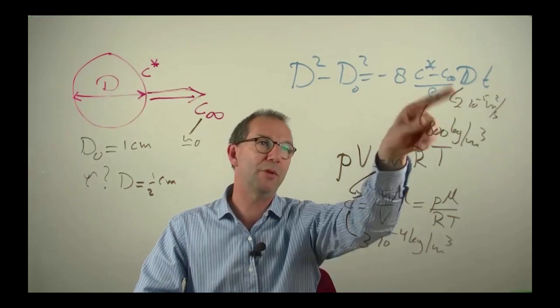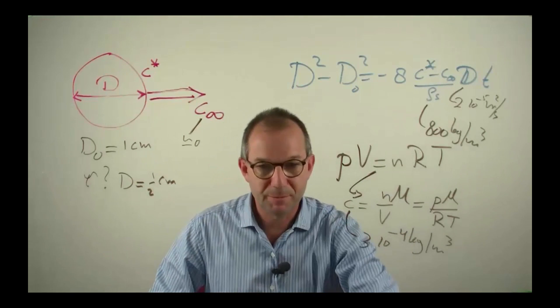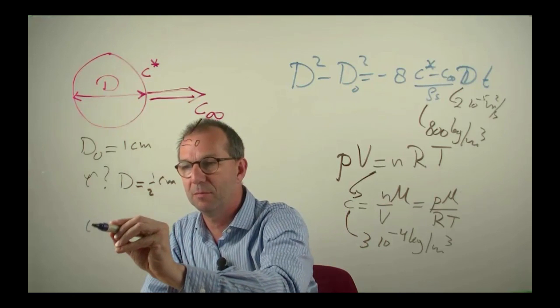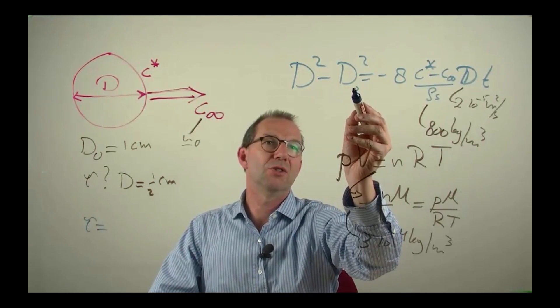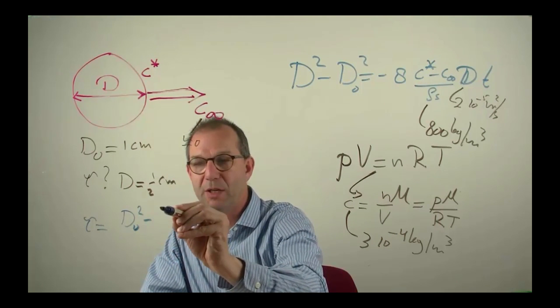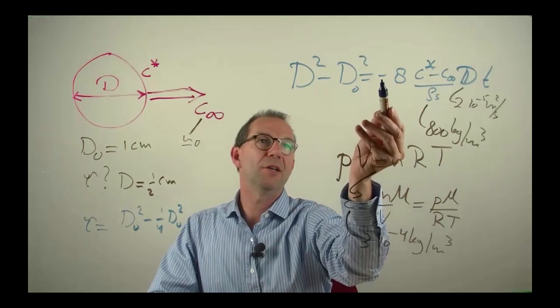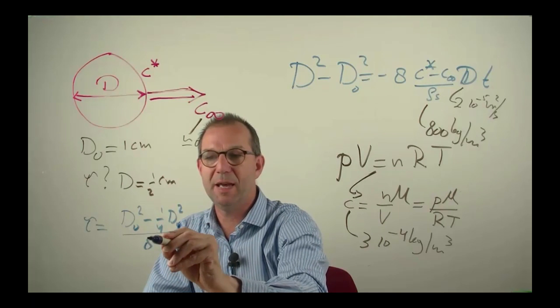Okay, now I can put everything together and I back out the time that I wrote here. Let me move over a little bit and write explicitly this time. It is d₀ squared minus half of that, so squared gives a quarter. I use the minus sign to flip these two.